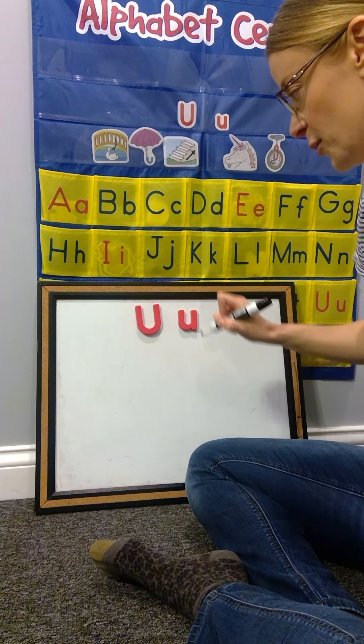And then I swoop and come right back up. So I have those two straight lines on the side, but then there's that swoop at the bottom. It's curved at the bottom.